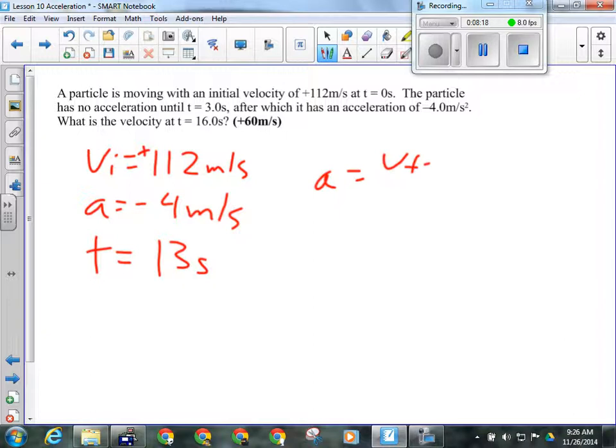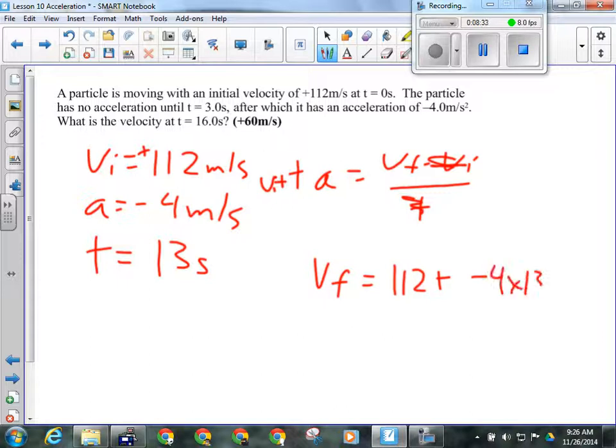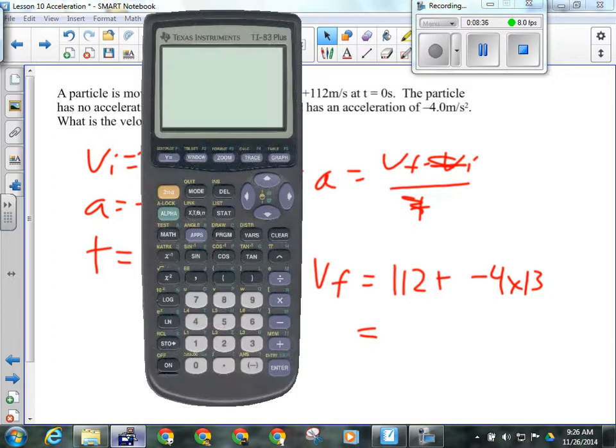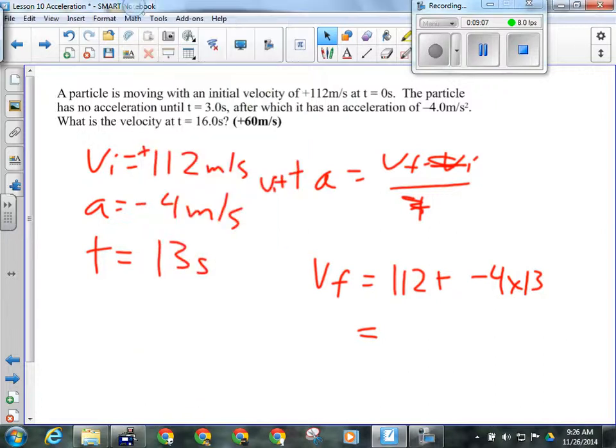A equals VF minus VI over T. We're solving for VF, so we multiply both sides by T, add VI to both sides, and we've got VF. So, VF equals 112 plus negative 4 times 13 seconds. So, 112 plus negative 4 times 13. So, we've got 60 there. 60 meters per second, and that has to be positive because the initial direction was positive.